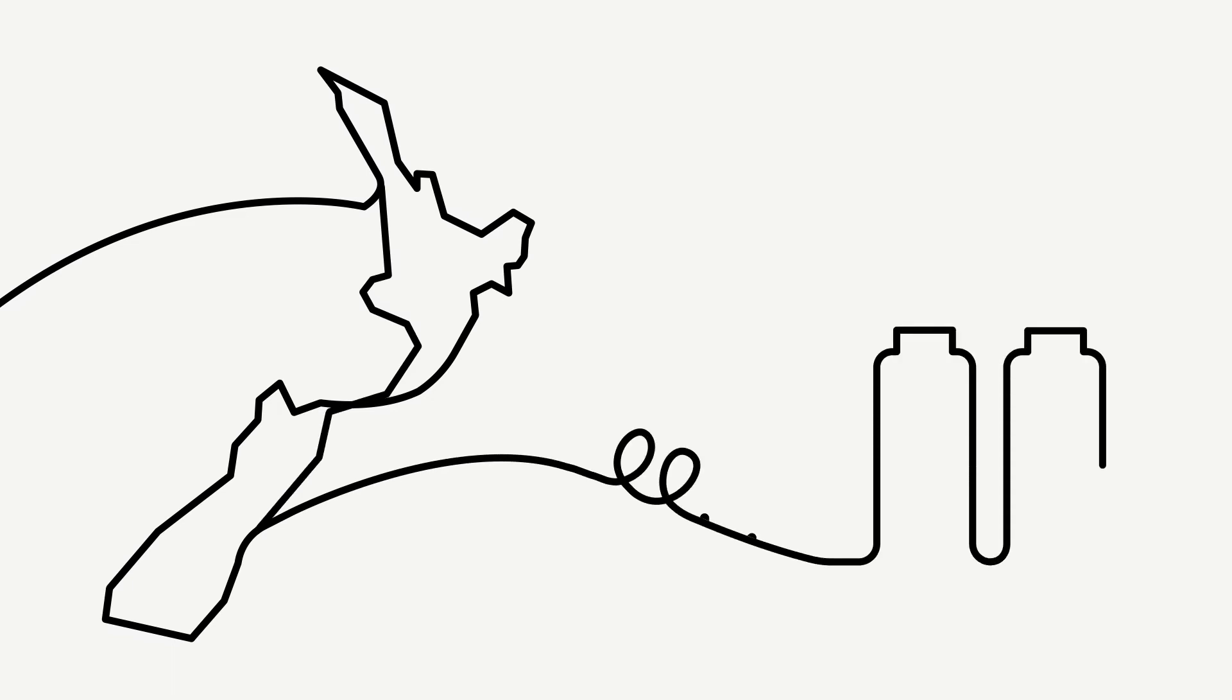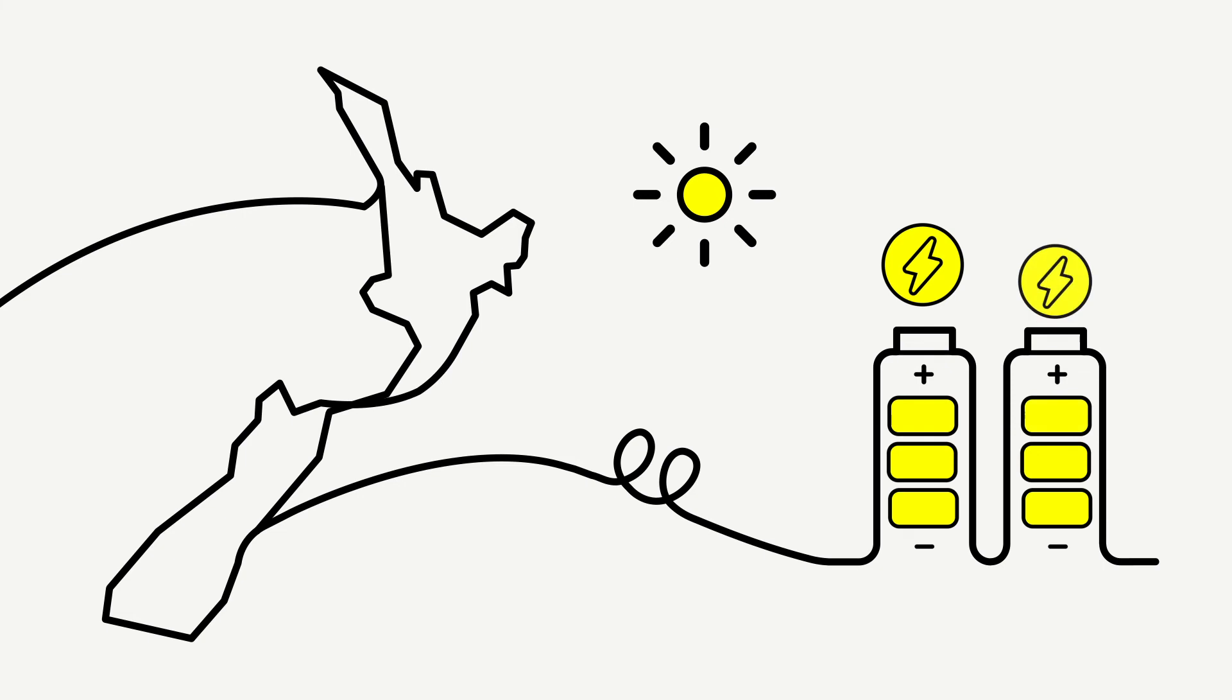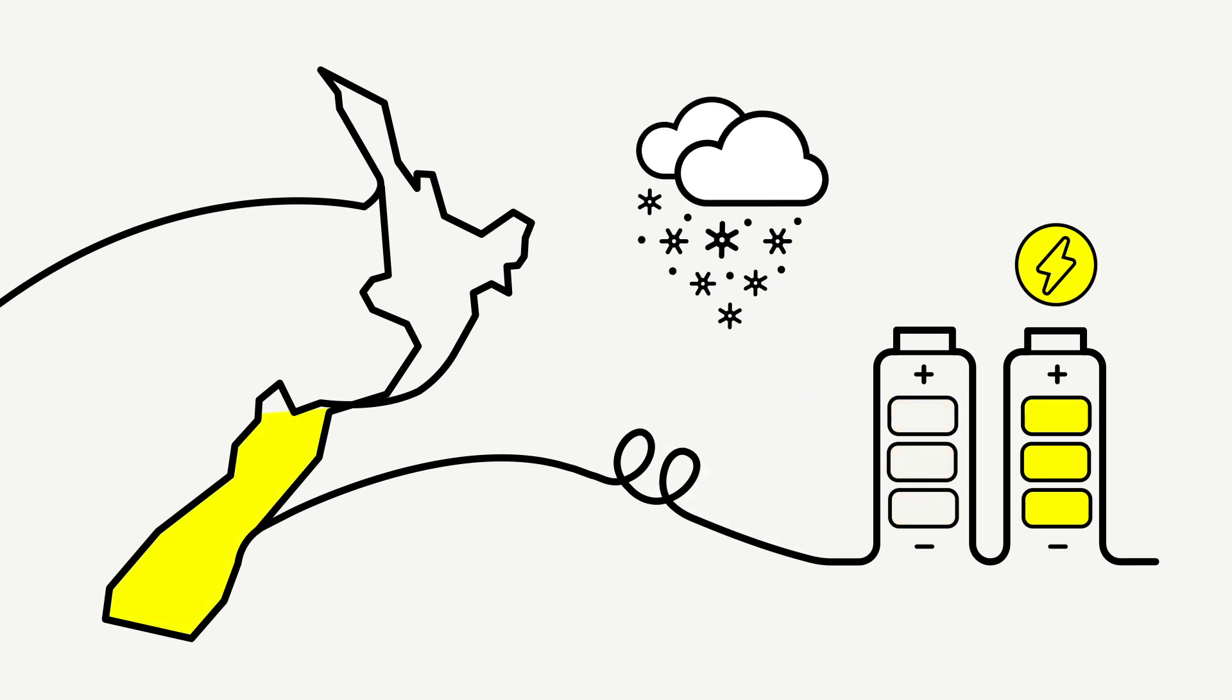So when New Zealand is using less electricity, we can charge up the battery. And then that electricity can be sent back into the grid for all of us to use, when the country needs it. Like when it's cold and dark.